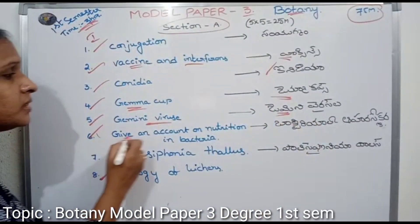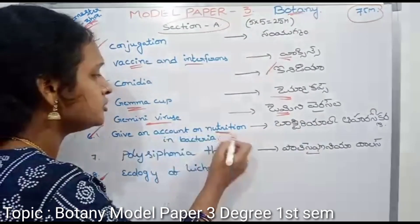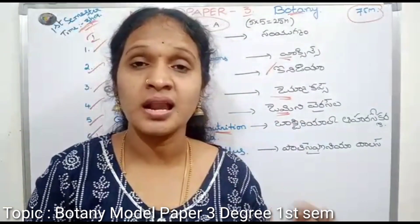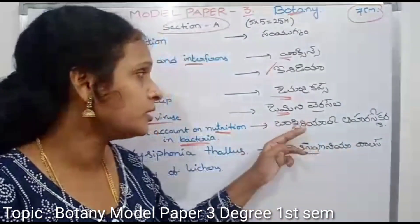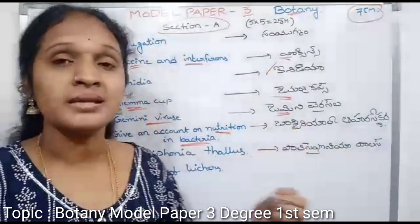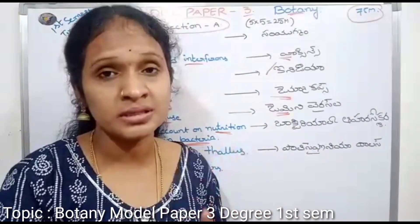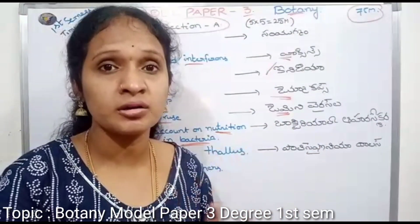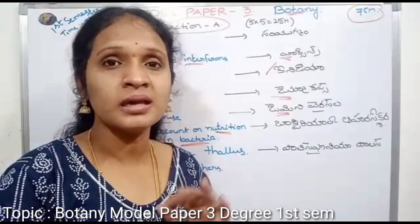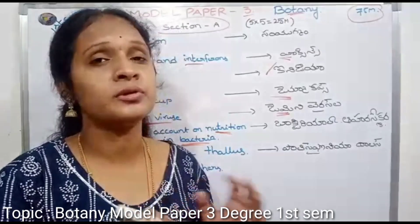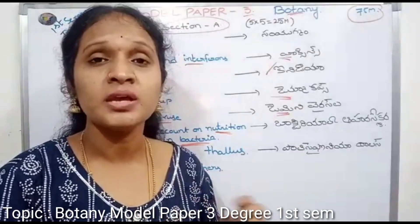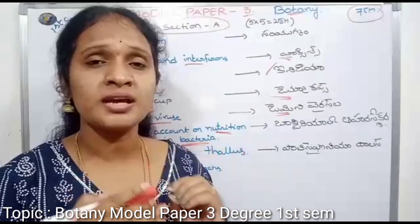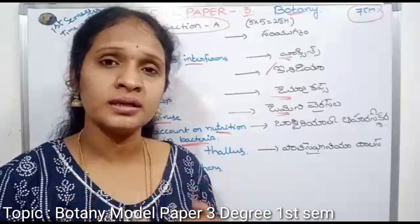Give an account of nutrition in bacteria. Bacterial nutrition — this is about food. The types are: photo-autotrophic, chemo-autotrophic, photo-heterotrophic, and chemo-heterotrophic. These are all the types. For 5 marks, cover 2 to 3 types.